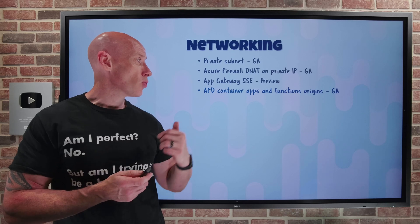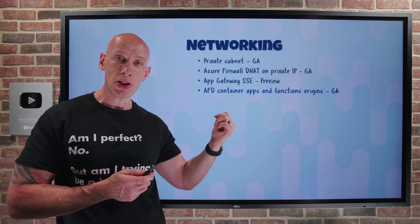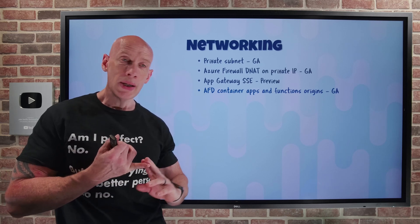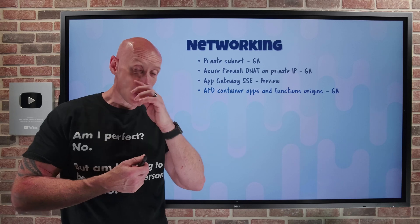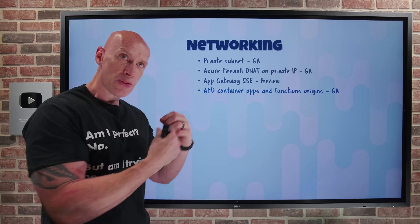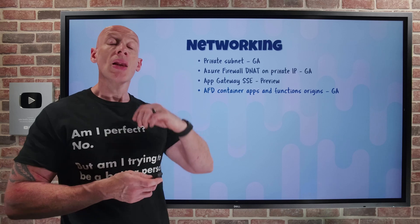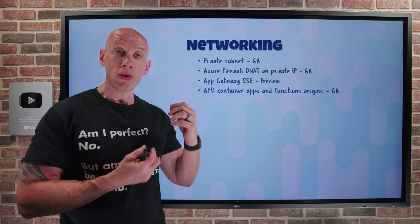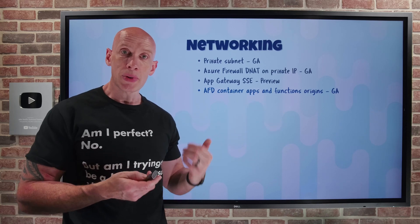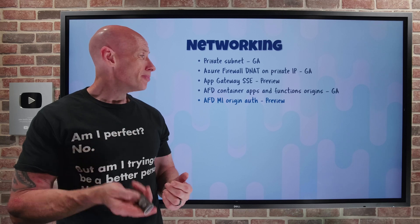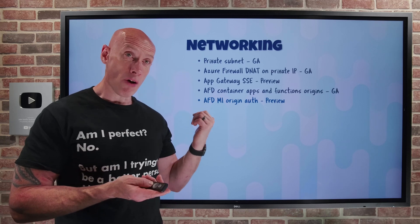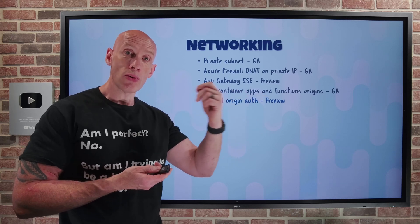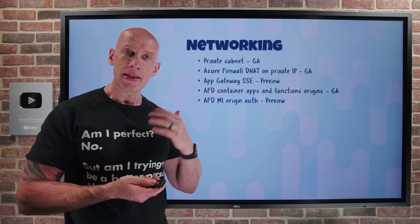Azure Front Door now supports container apps and functions as origins, in GA. This is for the premium SKU. If I have container apps or functions using private link — accessed via an IP address on your virtual network — I can still use them as origins for Azure Front Door premium, making Front Door the only way to consume those instances. Also, Azure Front Door can now use managed identity to talk to those origins, in preview, for both the standard and premium SKUs.